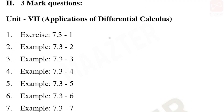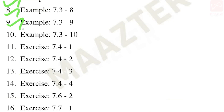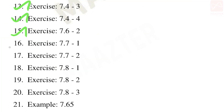Now for three-mark questions. Unit 7: exercise 7.1 — first through tenth problems; exercise 7.4 — first, second, third, and fourth; exercise 7.6 — second problem; exercise 7.7 — first and second sums.